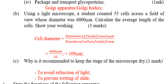Using a light microscope, a student counted 55 cells across a field of view. To calculate the cell diameter: cell diameter equals the diameter of the field of view divided by the number of cells in the field of view. Also: why is it recommended to keep microscope lenses dry? To avoid diffraction of light, or to prevent wetting of the slide.